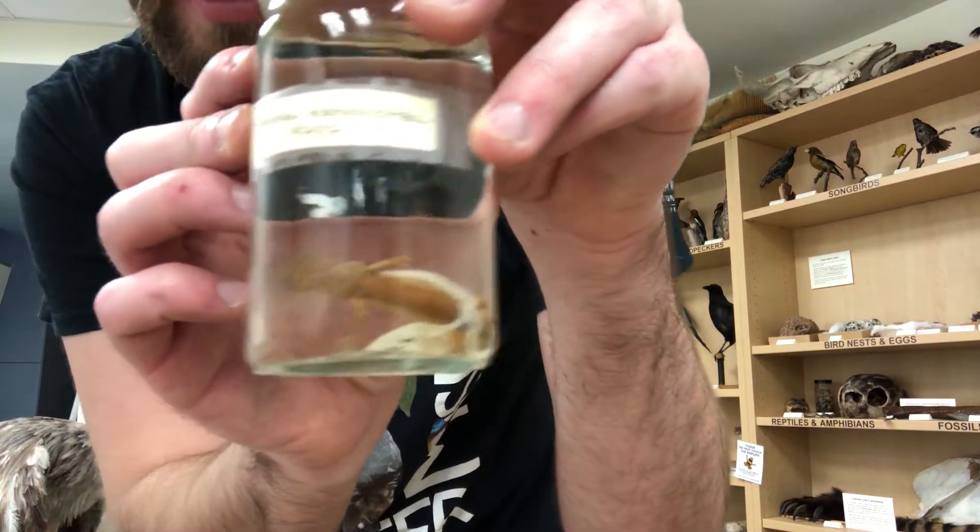And to really talk about what a ring species is, we're going to talk about a certain group of animals known as the Ensatina salamanders.